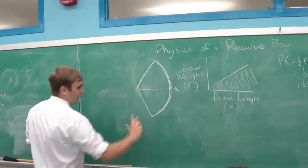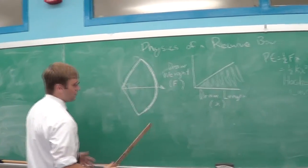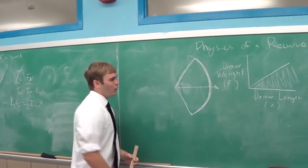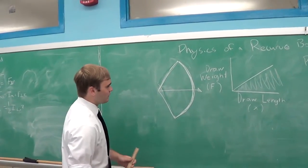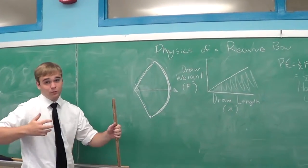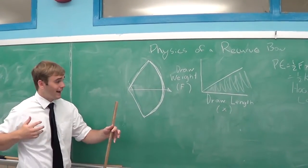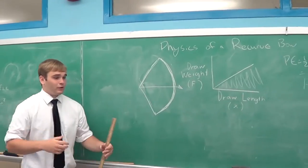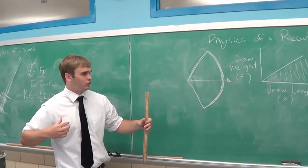And because it's pulled back, it's got potential energy. Oh, yeah. So, the potential energy can be seen as coming from the draw weight of the bow, which is the amount of force it takes to pull the string back, and the draw length, the amount of length you've pulled the bow string back.